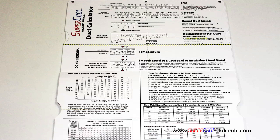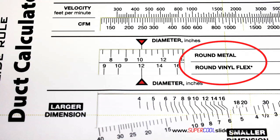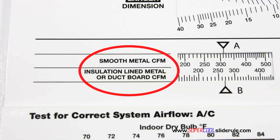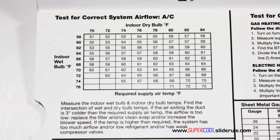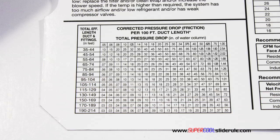Inside is packed with even more information. It performs sizing of both metal and flexible duct. It has the only direct reading conversion from smooth metal to insulation-lined metal we've ever seen. The majority of technicians have never been taught that if the insulation is on the inside of the ductwork, you cannot size it with a regular duct calculator. It also has step-by-step directions for determining airflow through a gas furnace, electric furnace, or an air conditioning unit, plus pressure drop multipliers for ductwork as well as recommended velocities.